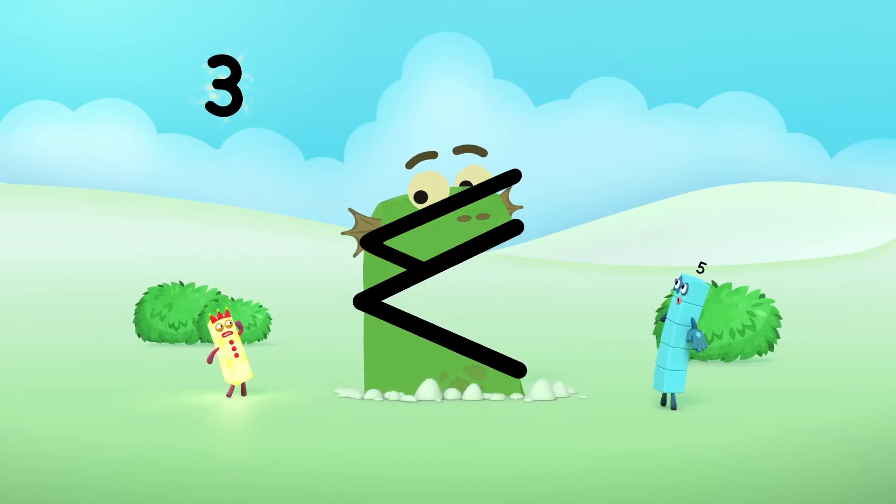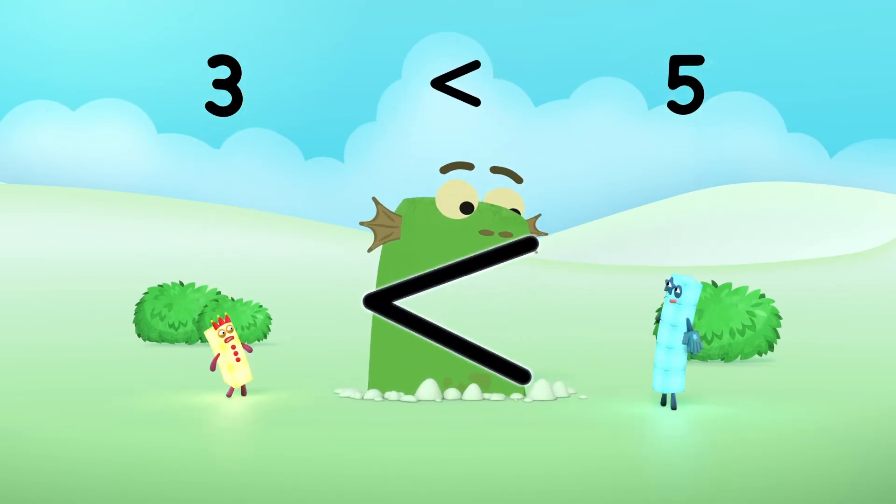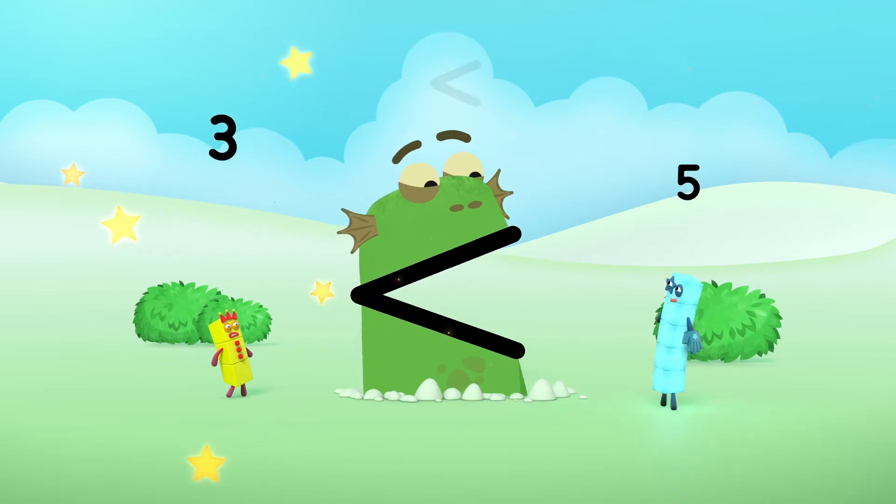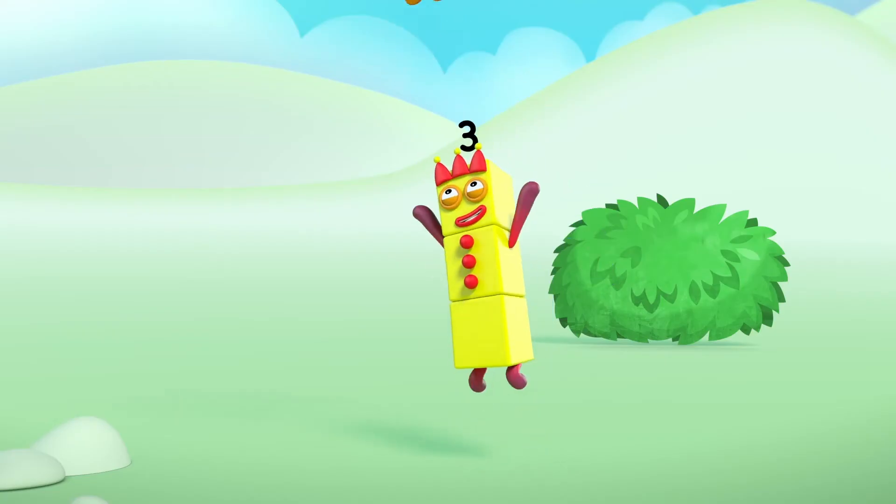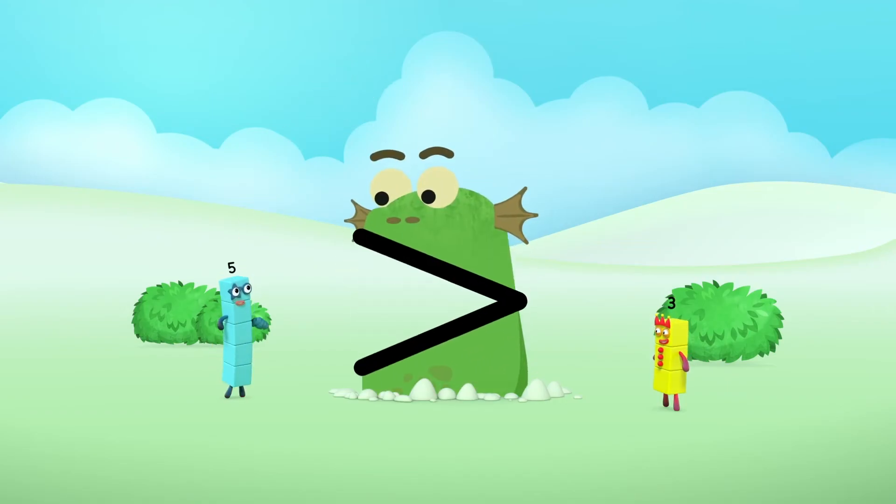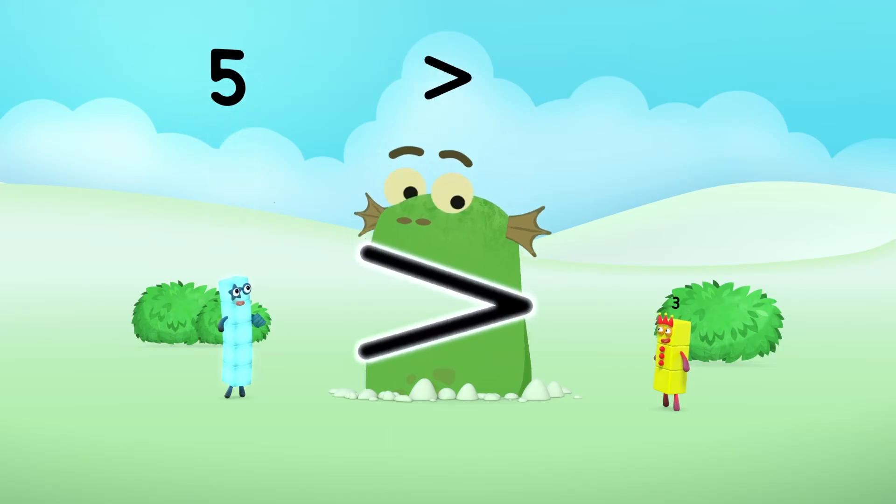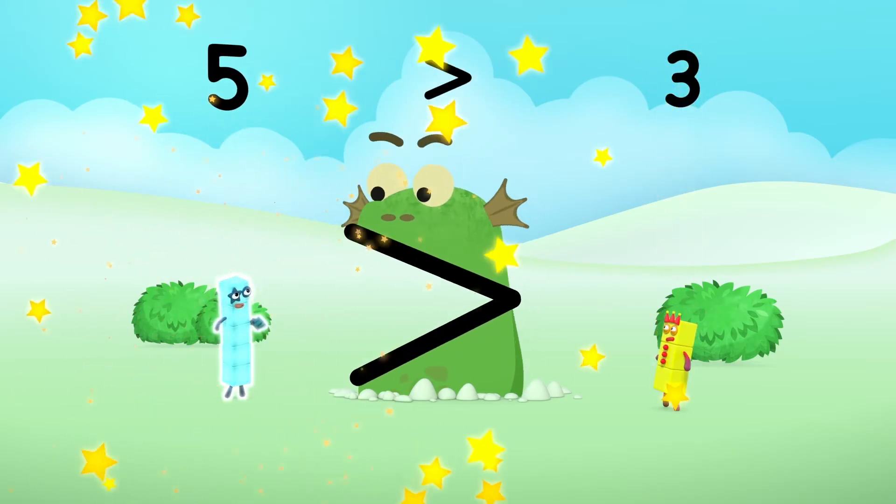Three is less than five. Me like five. Me mean five is greater than three. Me like five.